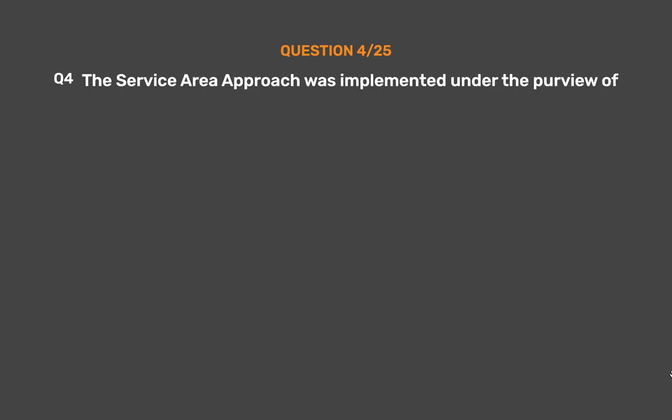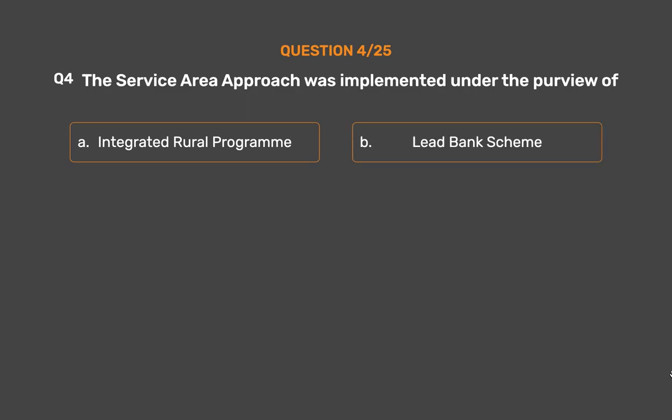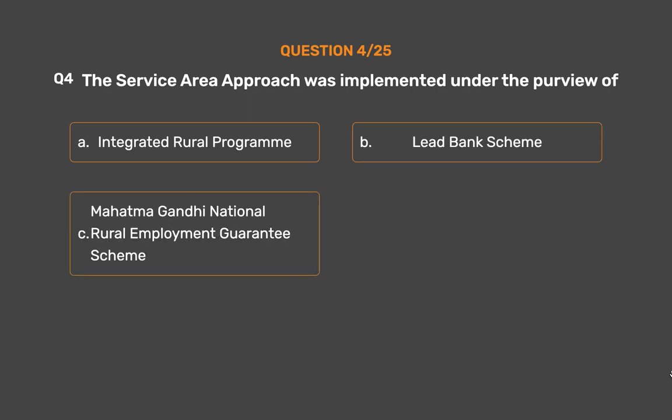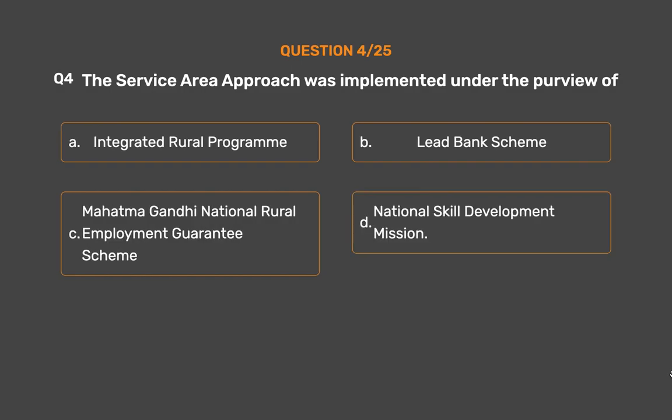Question No. 4: The Service Area Approach was implemented under the purview of ___. Option A: Integrated Rural Program. Option B: Lead Bank Scheme. Option C: Mahatma Gandhi National Rural Employment Guarantee Scheme. Option D: National Skill Development Mission.